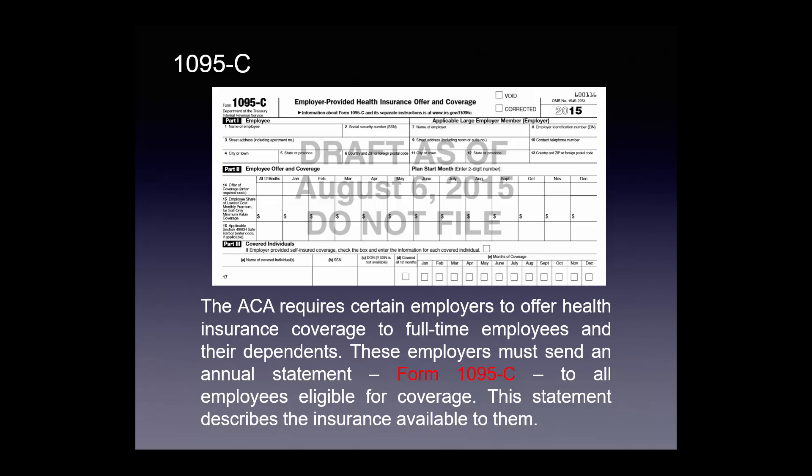The 1095-C is the Employer-Provided Health Insurance Offer and Coverage form. The ACA requires certain employers to offer health insurance coverage to full-time employees and their dependents. These employers must send an annual statement — Form 1095-C — to all employees who are eligible for coverage, describing the insurance available to them.